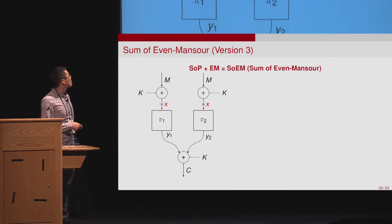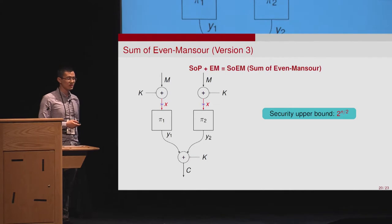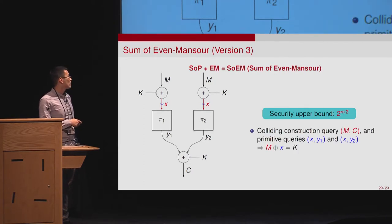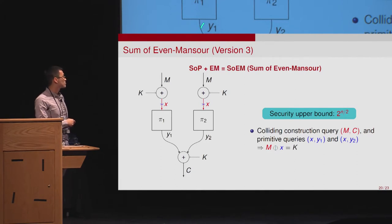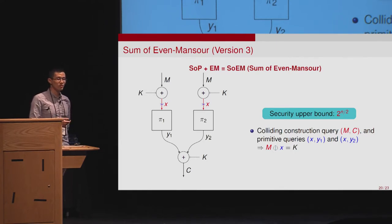The third construction uses two independent permutations and one single key. Again, we can show this can be broken at birthday bound. The idea is to find a collision of the input M of the construction query with the two inputs X of the two primitive queries. As long as this happens, we can find a relation between the output Y1 of the first primitive query, the output Y2 of the second primitive query, and the output C of the construction query, allowing us to distinguish the real construction from the ideal world.